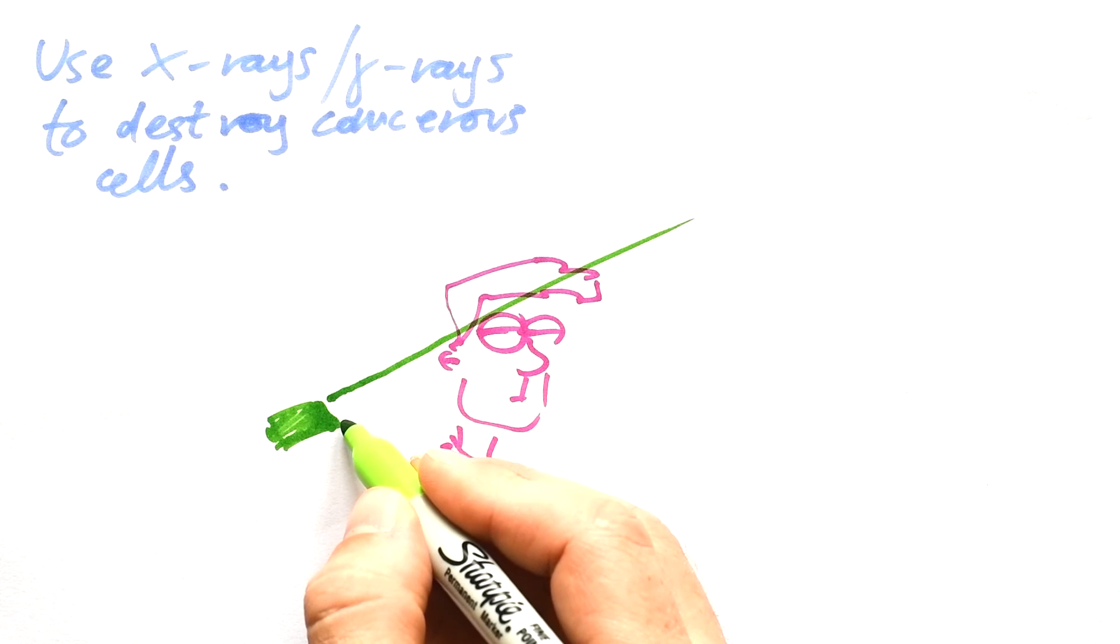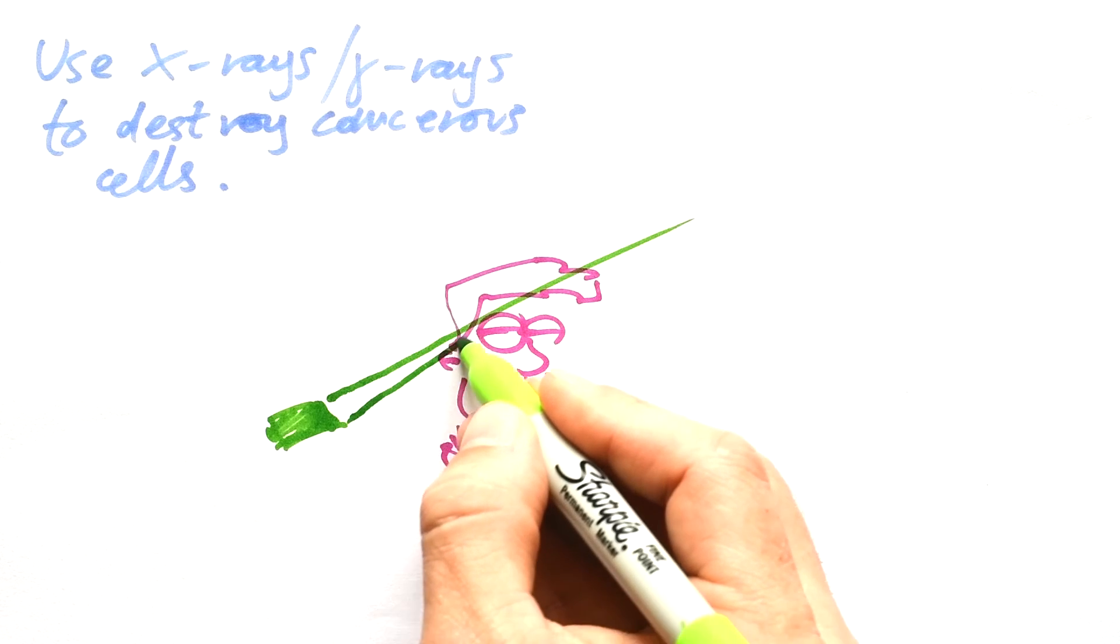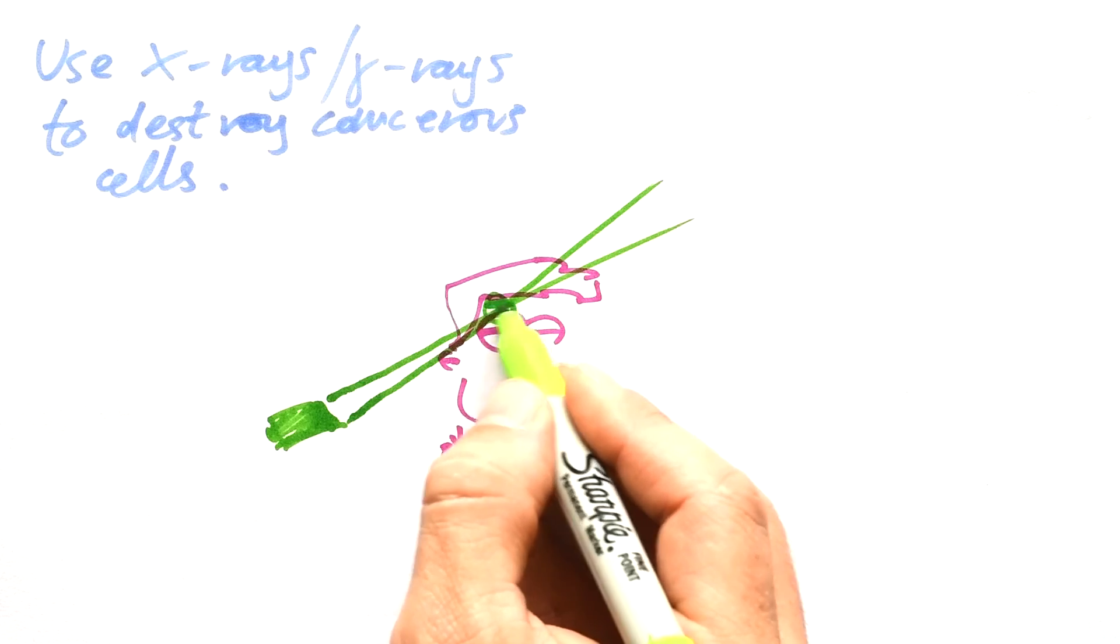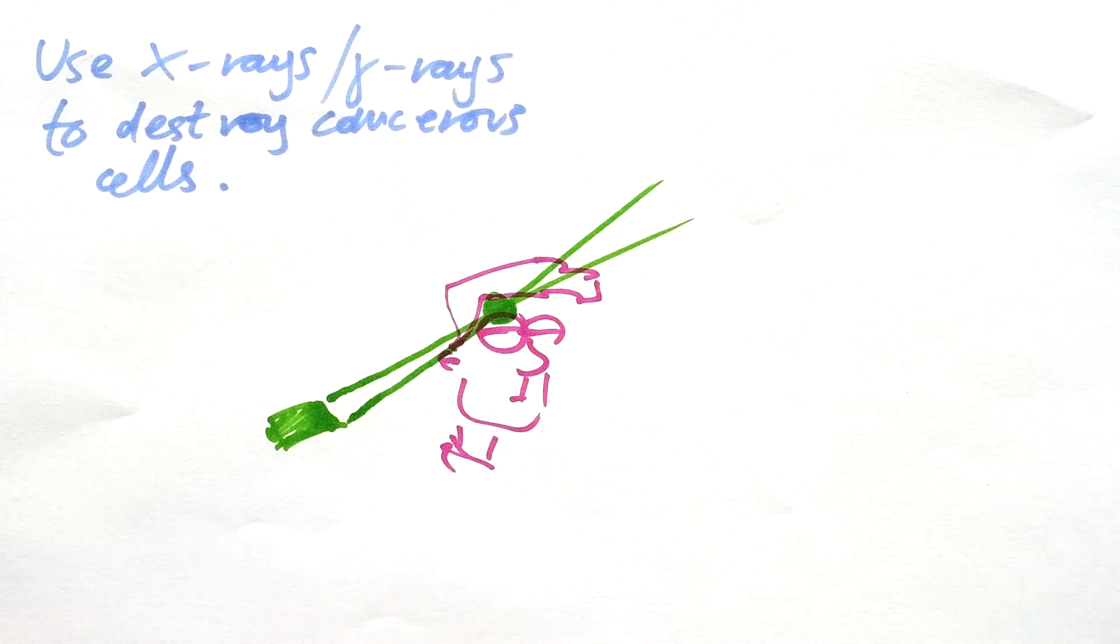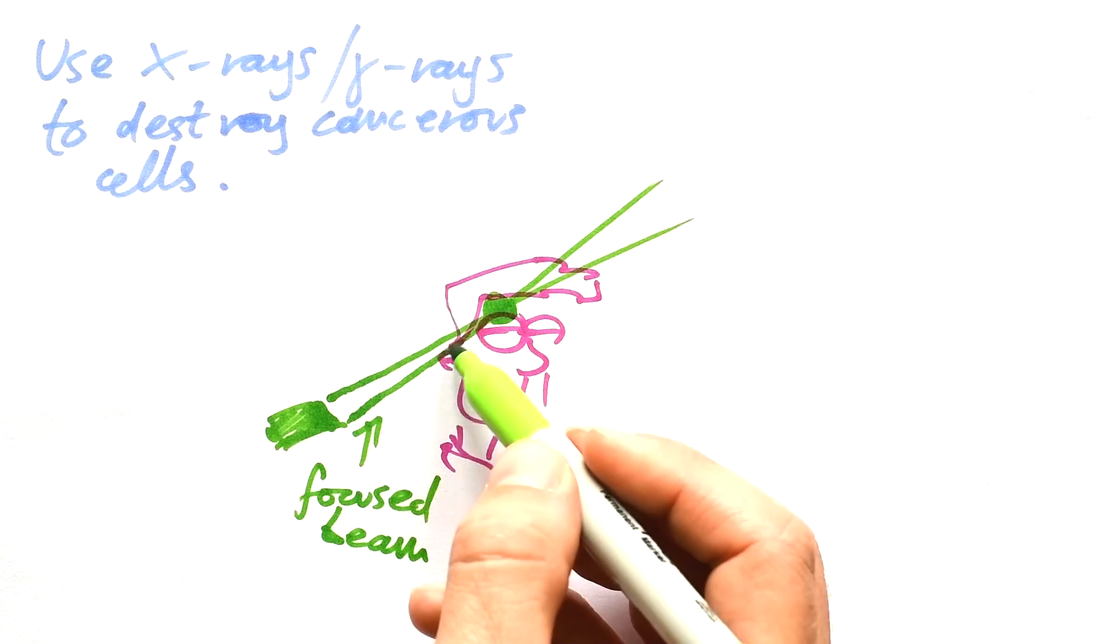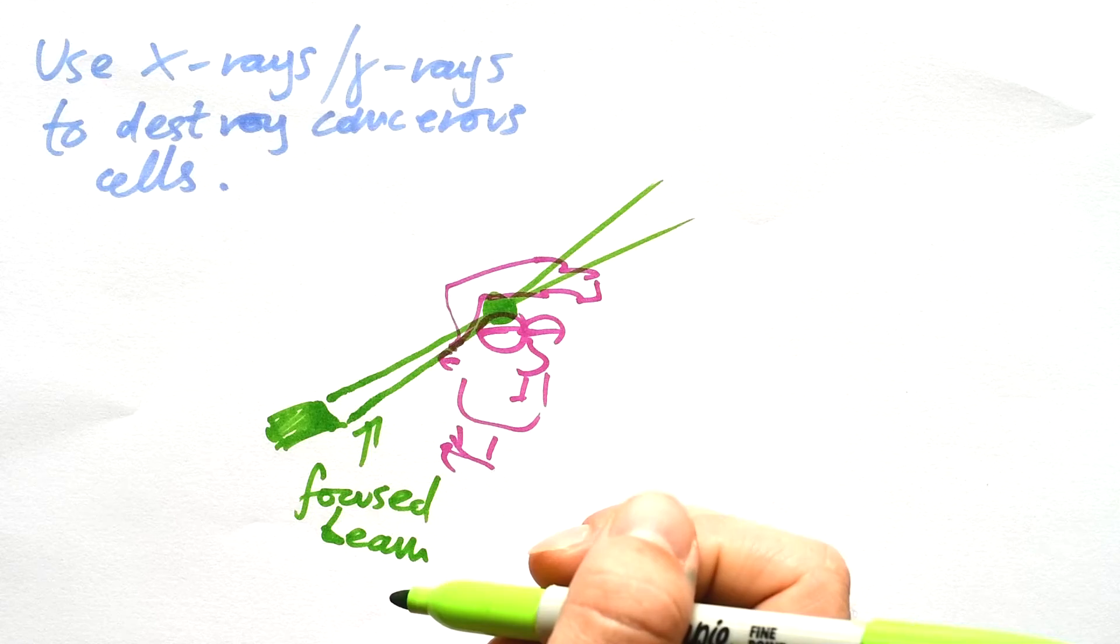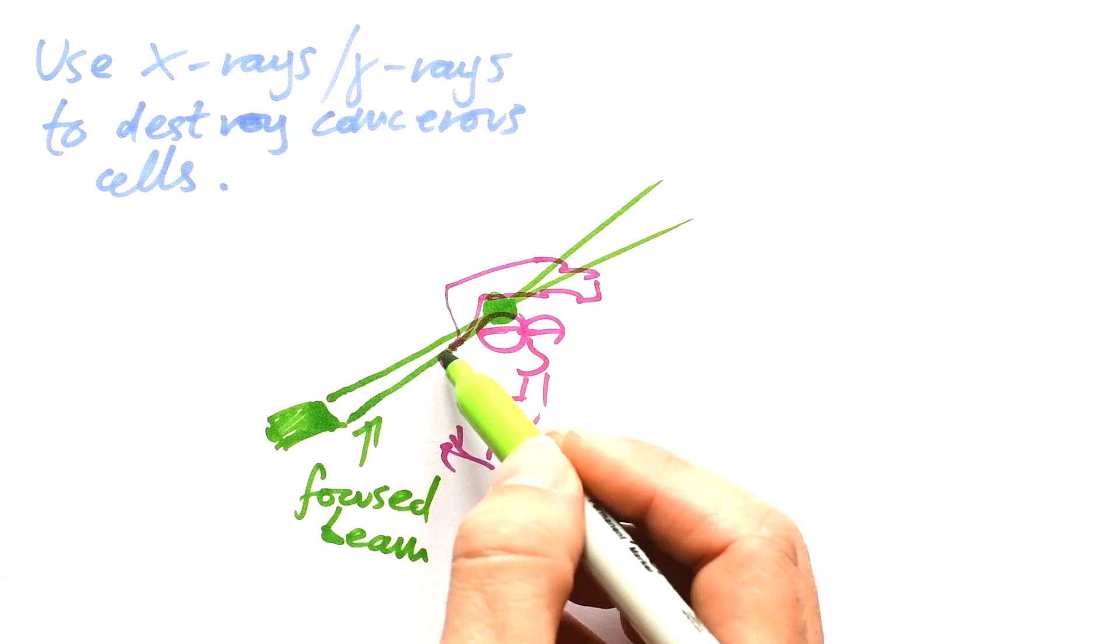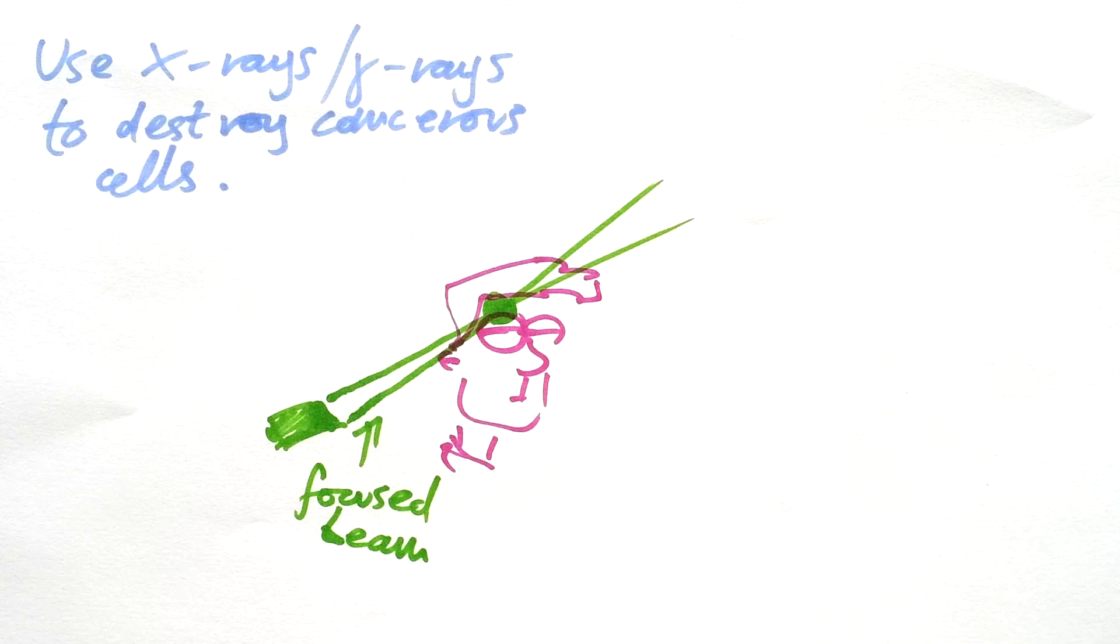And so you don't have just a straight beam going in, a parallel beam. You have a focused beam that meets right where the tumour is. That means that even though all of the radiation is going into your head, it is more spread out before and after the tumour. So that means that the chances of something bad happening is reduced.